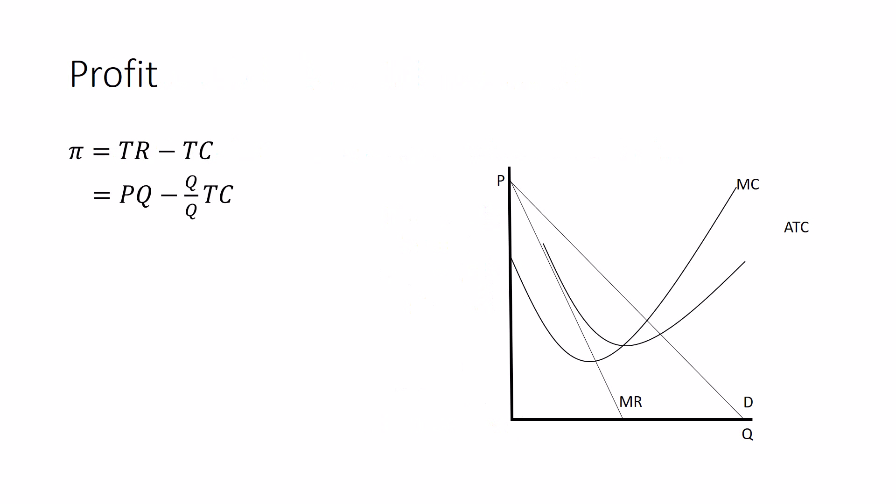So let's rewrite total revenue minus total cost a couple of ways. Total revenue is P times Q. And here I'm multiplying total cost by 1, so it doesn't change its value. It's times Q divided by Q. But I can rearrange this now. PQ minus Q times average total cost. I moved that denominator Q under the total cost, basically.